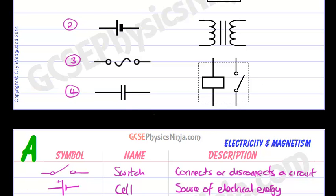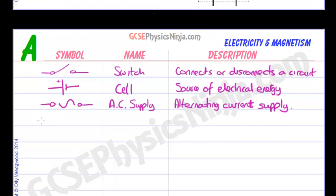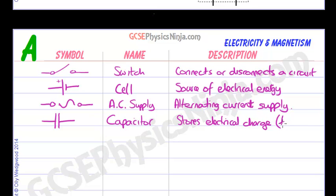The next component, this strange one with two equal length lines, is called a capacitor. And this is a temporary store of electrical energy. So it stores electrical charge and it's usually only temporary. In a future flashcard we'll take a look at capacitors and how they work.